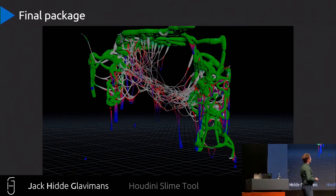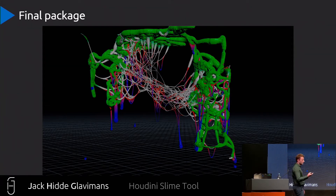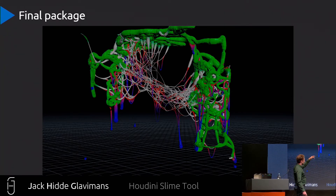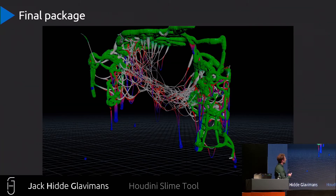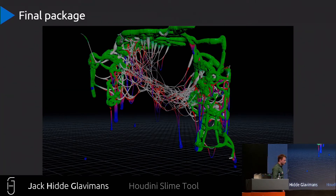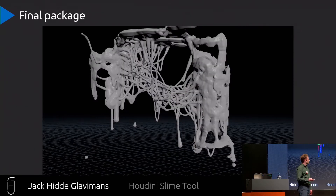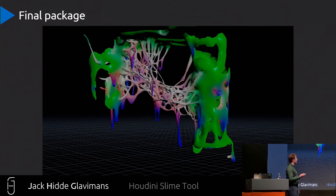To generate geometry from the simulation, there is one big VEX node which checks the colors. For example, the blue colors get more thickness when they are at the bottom of their bounding box to create droops, and the white parts get their thickness from how many surrounding points there are around them, giving a stringy feel. This whole mesh then goes into VDB.